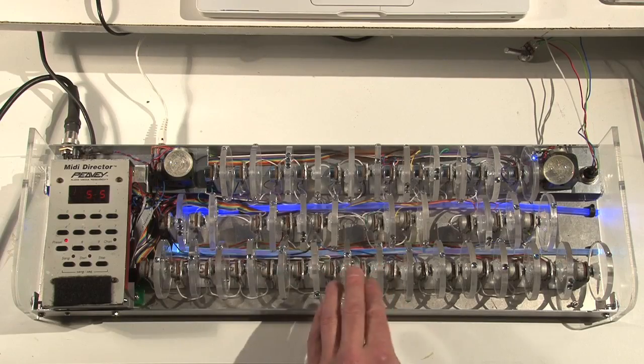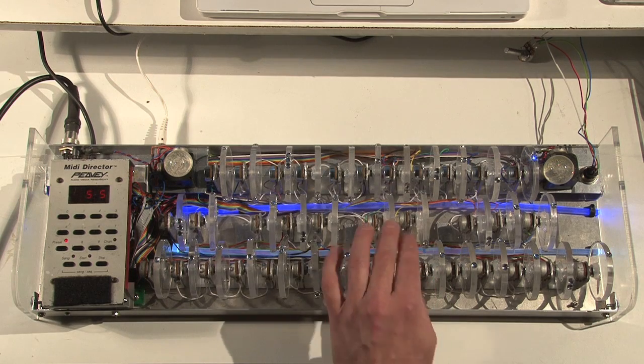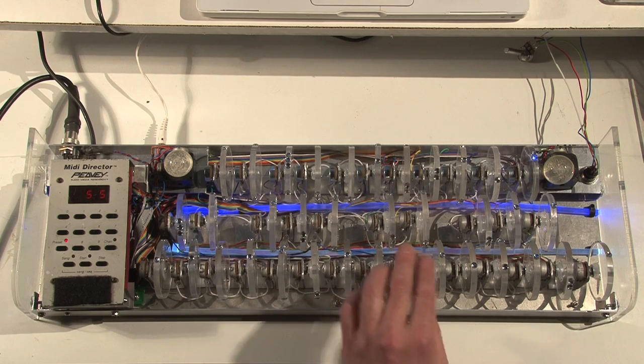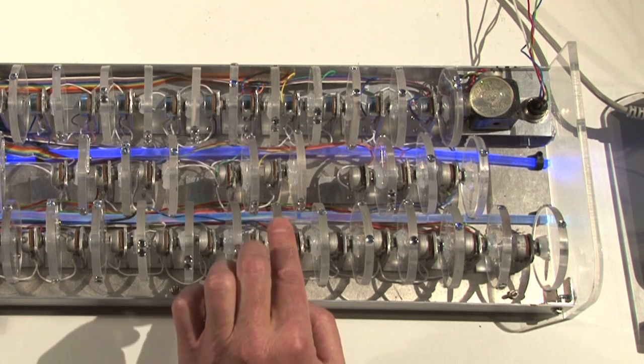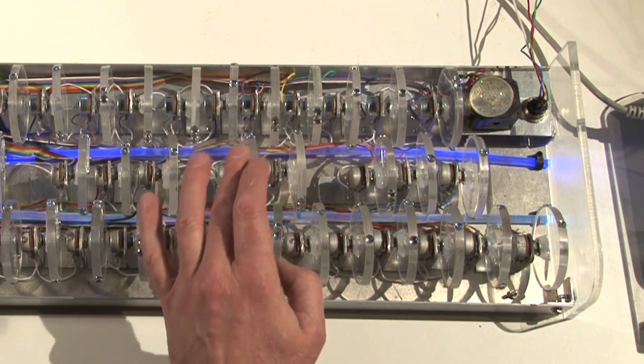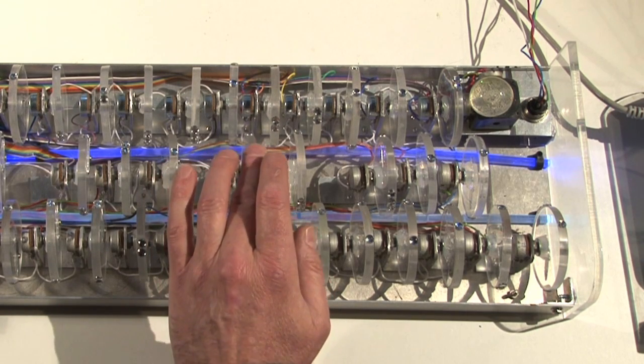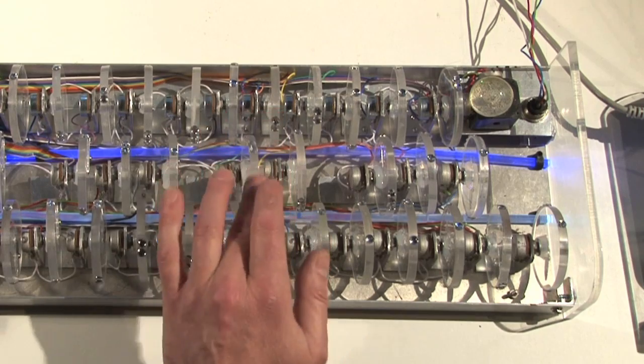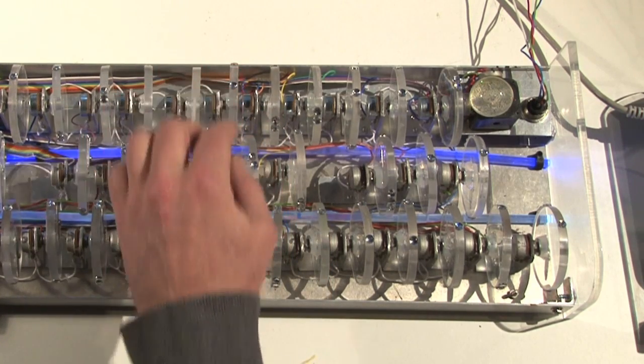Now, after that we have the modulation section. One is for the filter and one is for the oscillator. Now the oscillator one comes first. This is the depth of the modulation, the speed of the modulation, and the wave shape of the modulation.